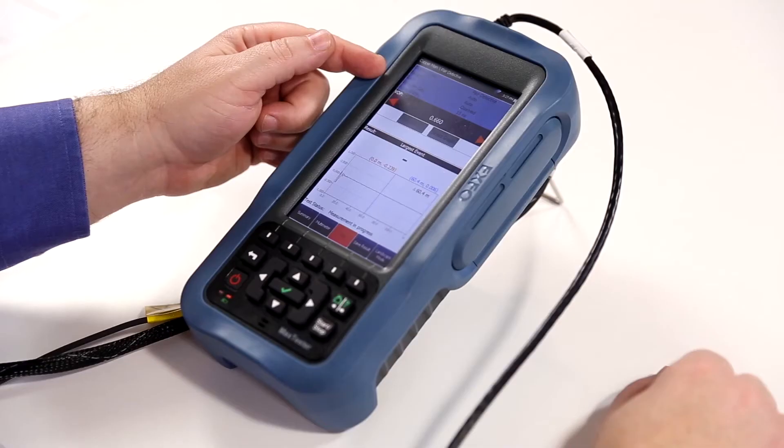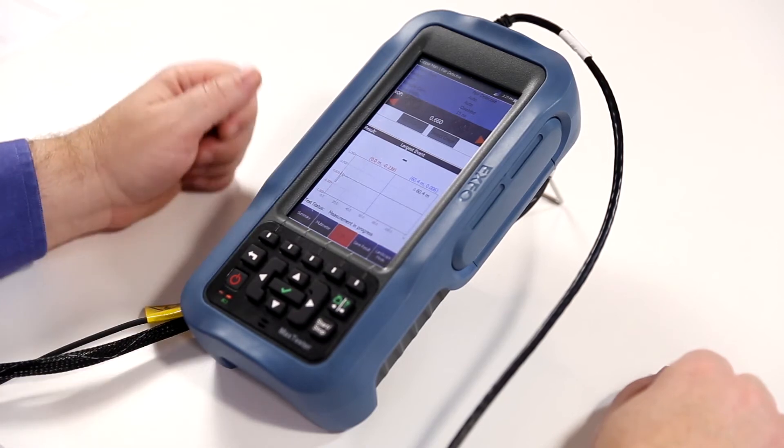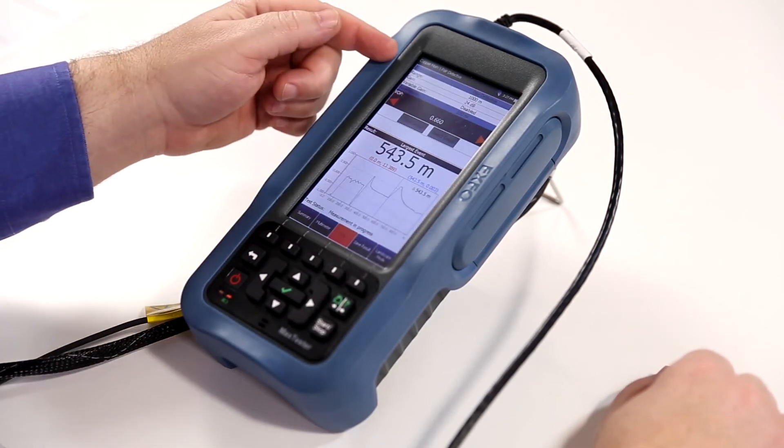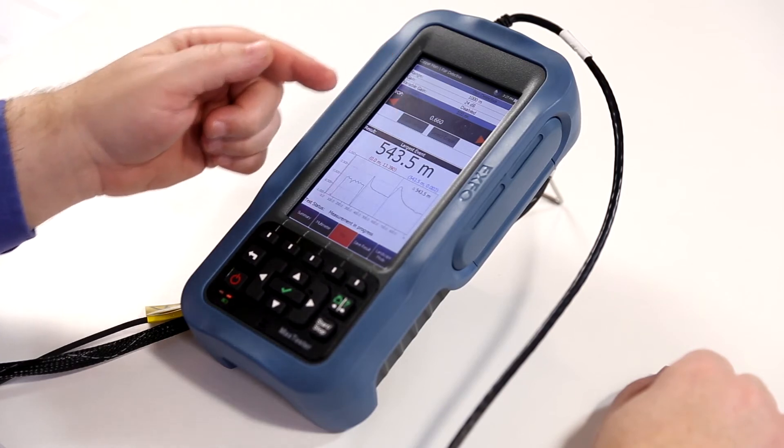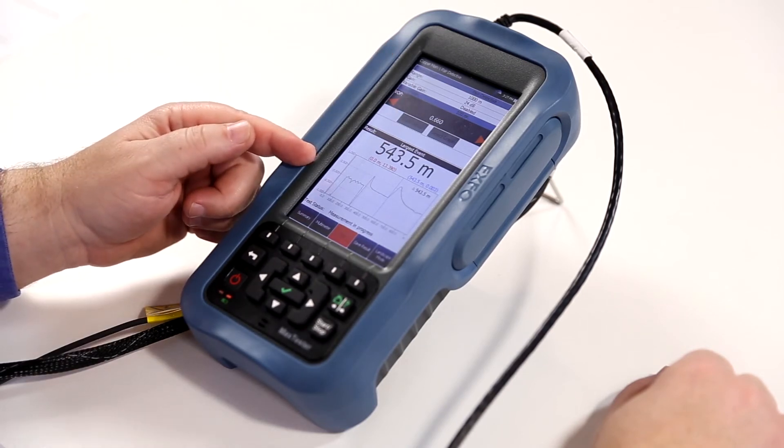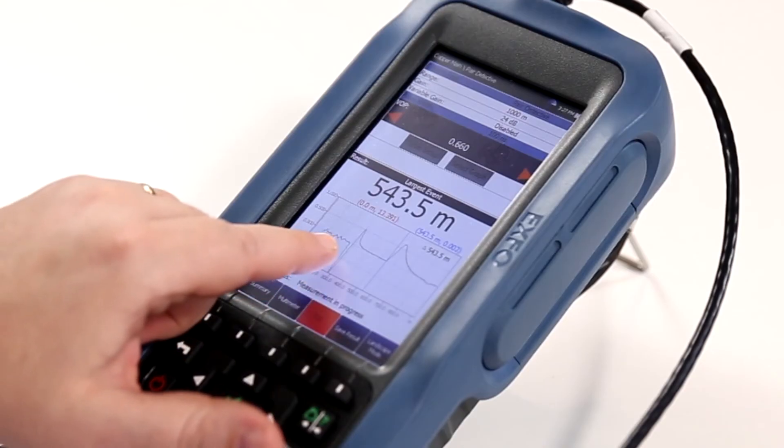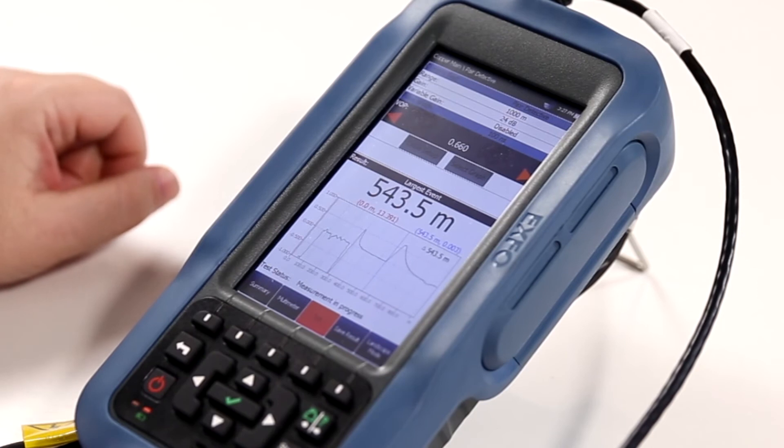Because much of this information is grayed out, it means that the test is still in progress. Once it becomes visible, you will then be able to see the outcome of the TDR test. In this particular case, we can see that we have a bridge tap and the end of the cable.